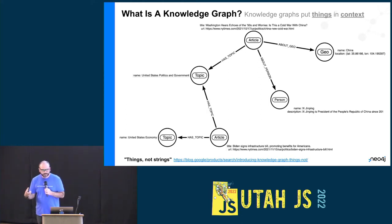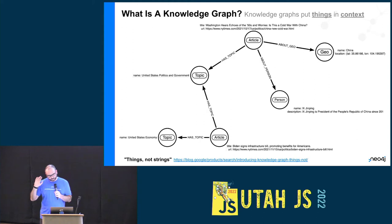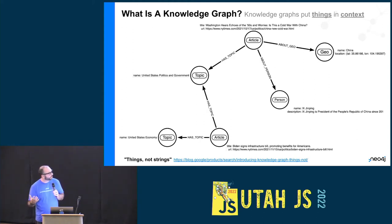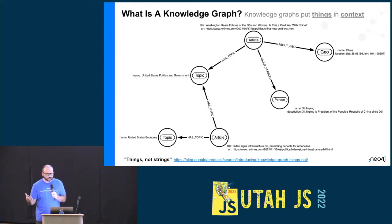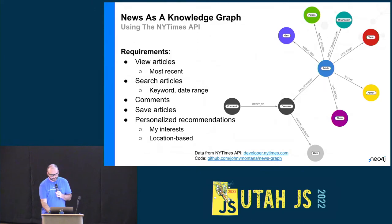You may also hear the term 'knowledge graph.' The way I think of it is really just an implementation of a property graph — a graph with real data that describes how things are connected, putting things in context. This example comes from New York Times articles: for each article, I know the topics it covers, the geo areas mentioned, and other articles on the same topic. That's really a knowledge graph.